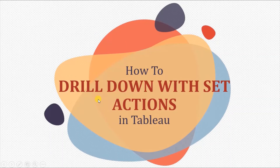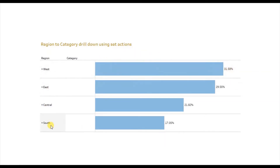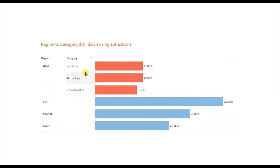In today's session we will see how to drill down with set actions in Tableau. Let me first show you the demo of what we will be doing today. Here I have a bar chart showing percentage of total sales for different regions. Suppose a user wants to see sales percentage of different categories in a particular region, like we want to see which categories are selling more in West region. So just click on West region and the sales percentage of different categories in West region is now visible.